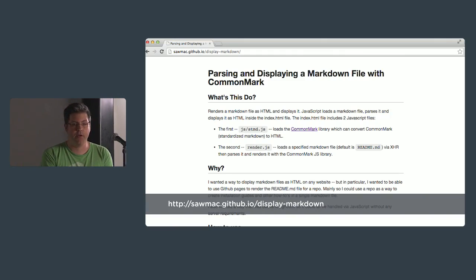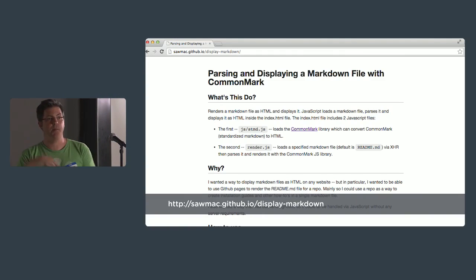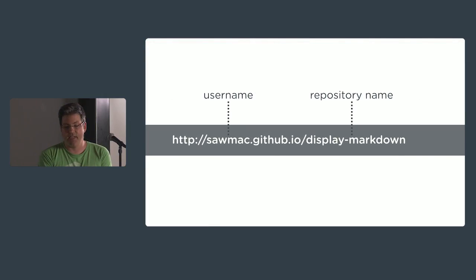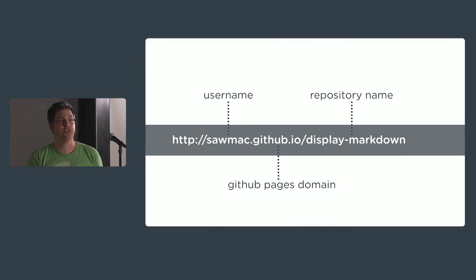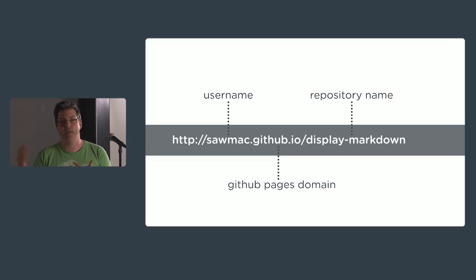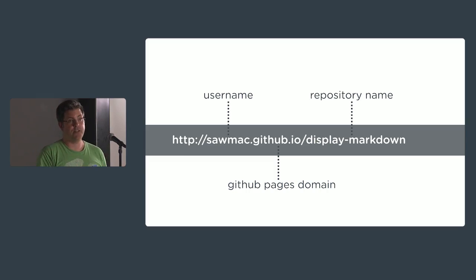Here's an example of one. This is for a repo I created called display-markdown. All it does is take a markdown file and turn it into HTML so you can put it on a website and see markdown as HTML. The important thing is the URL: somac.github.io/display-dash-markdown. So 'somac' is my username at GitHub. When you sign up with GitHub and create an account, you have a username. Then every repository has its own name.